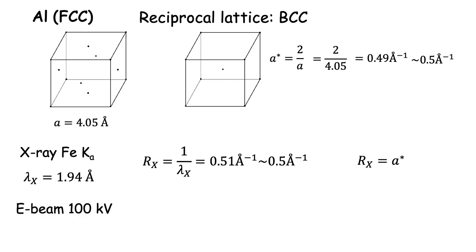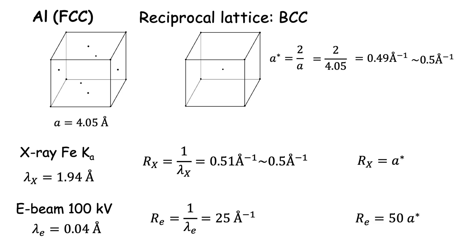If we use an electron beam at 100 kV, the wavelength is much shorter at 0.04 angstrom, giving an Ewald's sphere radius of 25 angstrom inverse for electron beams. In terms of a*, this is 50 times a*.